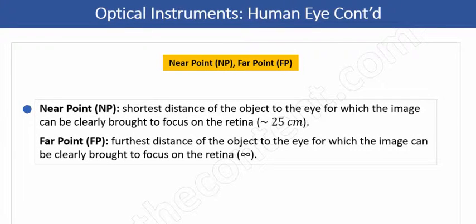Moreover, when a normal eye is focused at a near point, that's when the lens is considered to be fully accommodated, or we can say it's the point of maximum accommodation. And any closer and the image will not be clearly brought to focus on the retina.